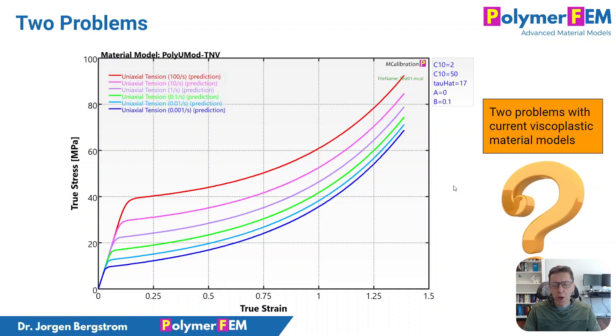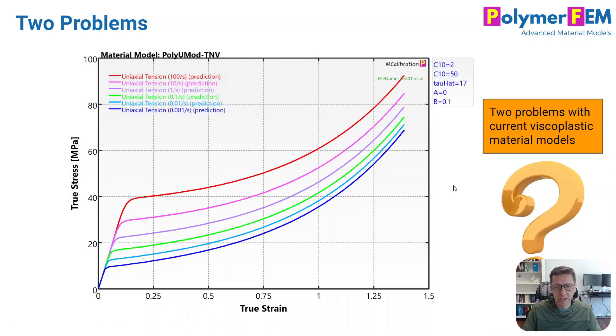Hi, today I'm going to talk about two problems that I often see when I try to model thermoplastics, thermoplastic elastomers, or rubber materials using a viscoplastic material model. Can you see what the two problems are?